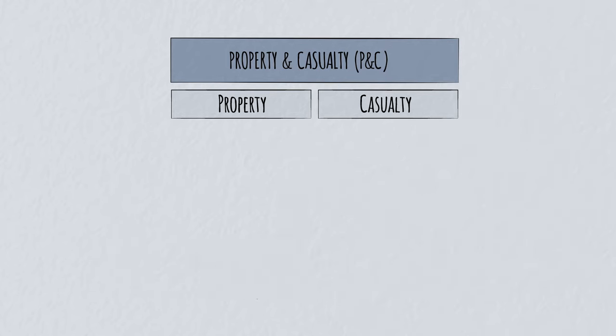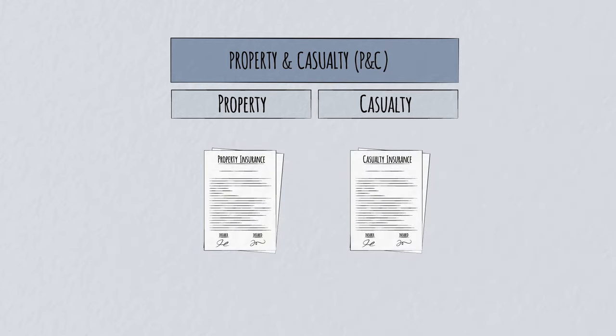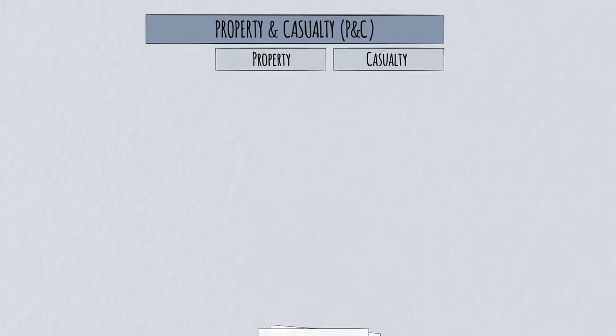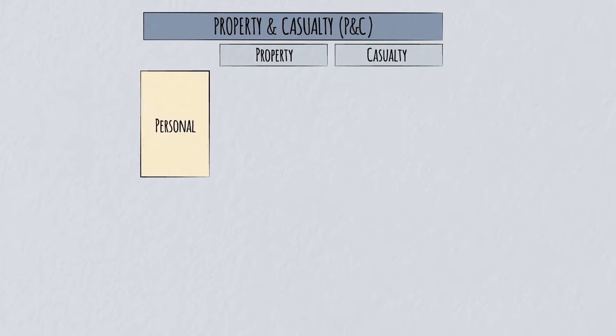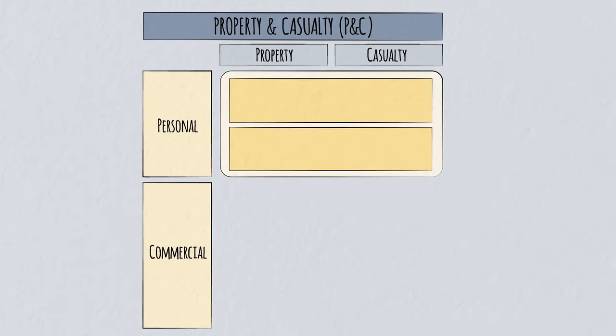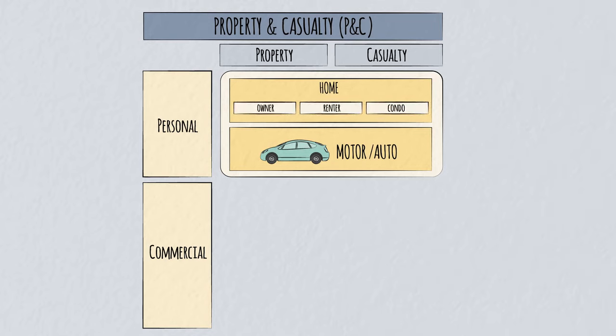Although some property and casualty risks can be insured individually, most insurance policies include both. There are two main segments: personal and commercial. In personal, the two largest categories are home and motor or auto insurance. Within home, you may need owners, renters, or condominium insurance, each covering a different mix of property and liability risks. Similarly, with motor insurance there are different policies for different combinations of risks.